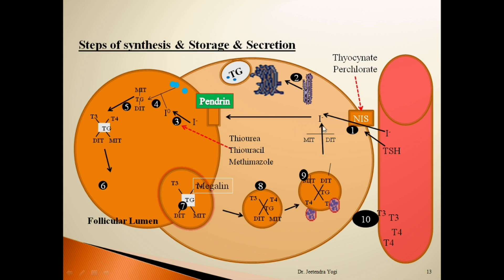The third step: the entered iodide molecule moves toward the follicular lumen and enters with the help of pendrin — the sodium-independent iodide/chloride channel — where the iodide molecule is oxidized into iodine. That is the third step: oxidation of iodide. The fourth step is organification of thyroglobulin, in which iodine combines with the tyrosine residues of the thyroglobulin molecule.